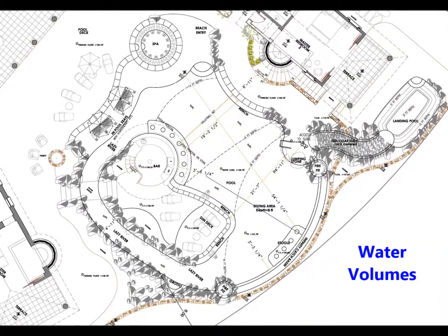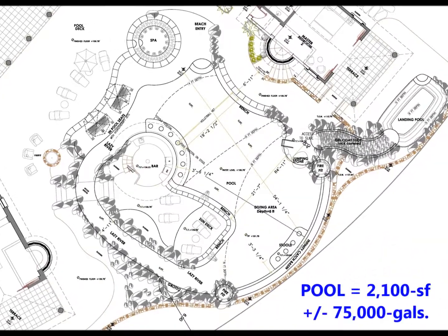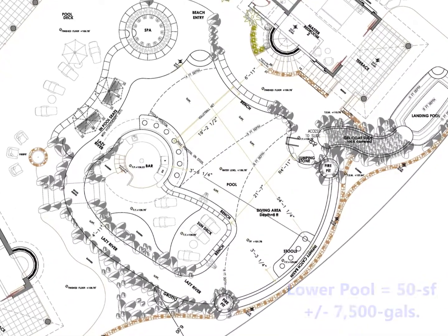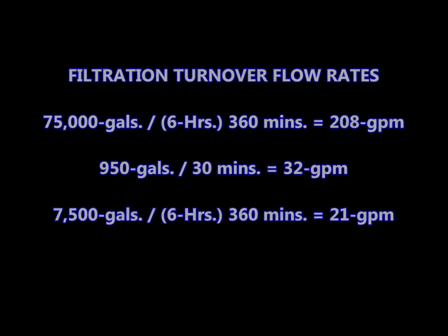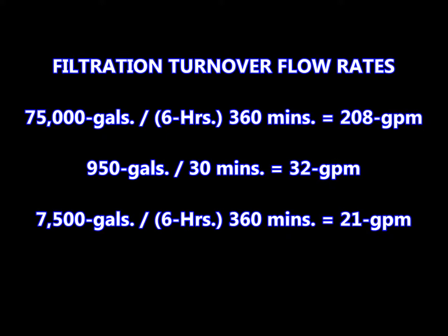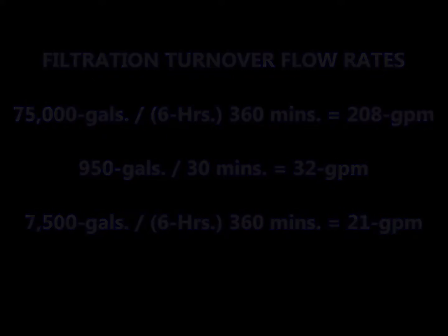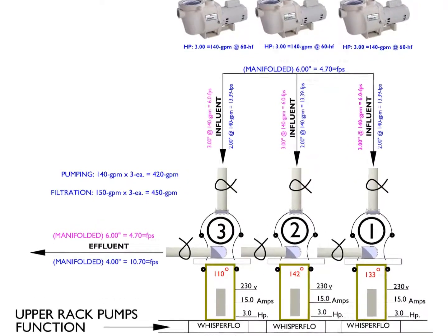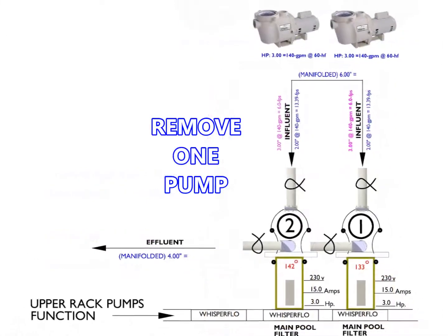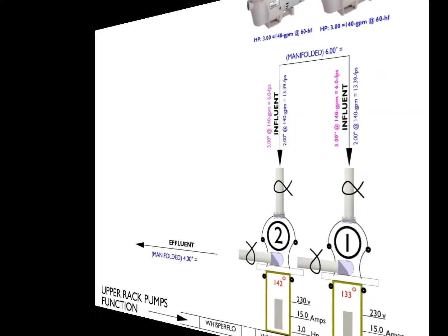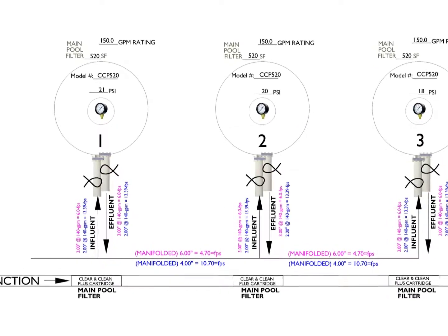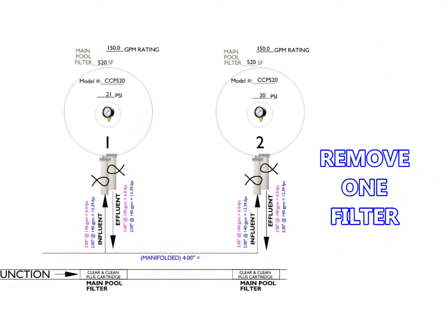In considering improvements, I started with the water volumes for each vessel. The pool volume is estimated at 75,000 gallons, the spa at 950 gallons, and the lower pool at 7,500 gallons. The vessel volumes are converted into the time span turnover rate required for commercial swimming pool standards. Based on these findings, it is my opinion that the electrical energy load of 45 amps currently consumed in driving the three pump motors for the main pool's filtration function could be reduced by one pump and one filter.